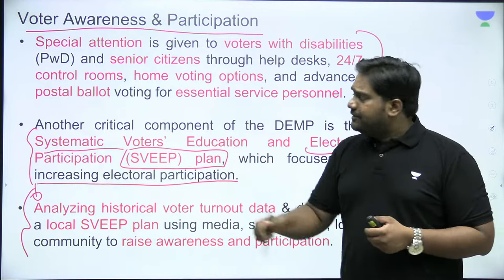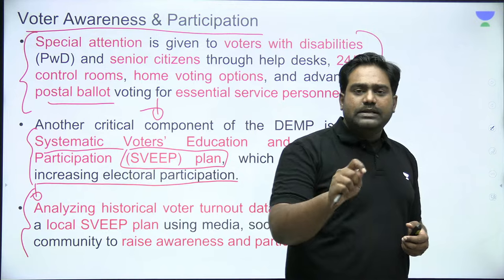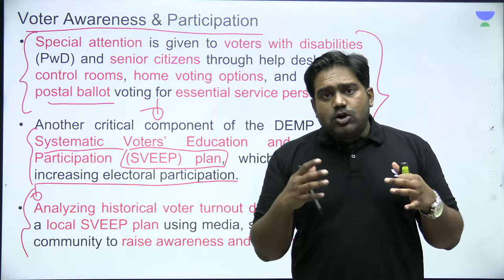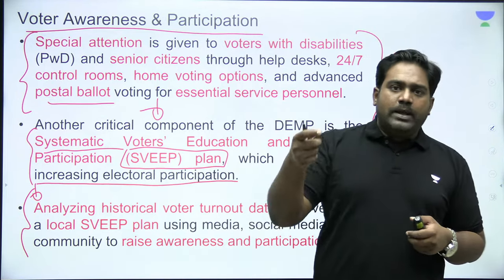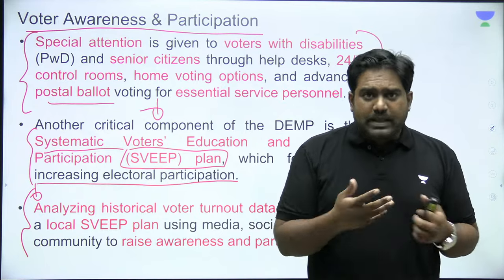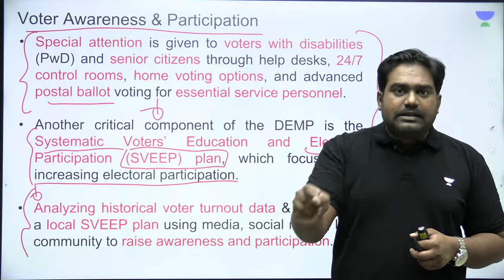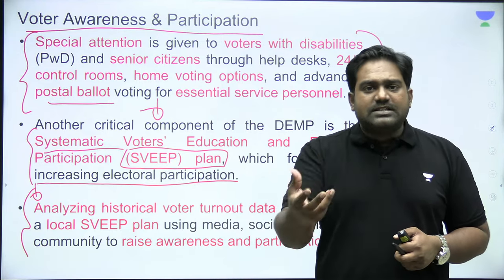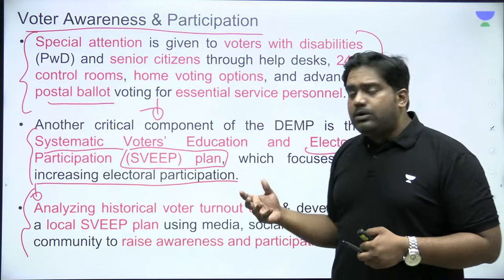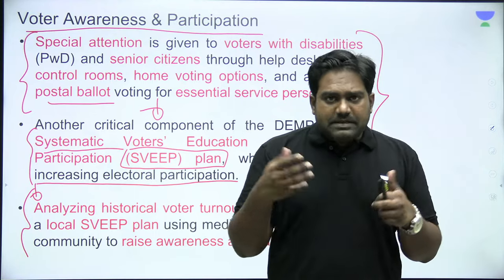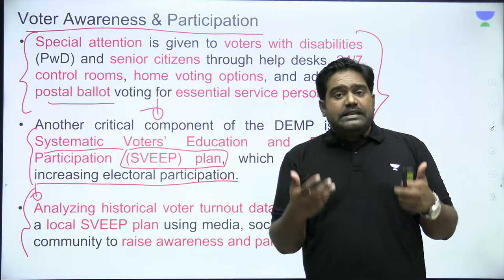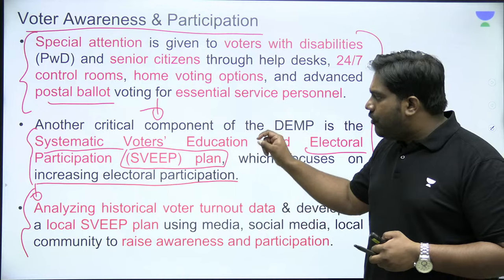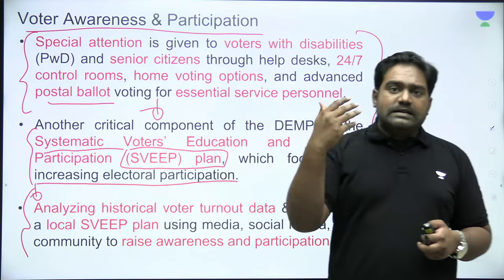These plans become easier if data regarding voter turnout is available. If certain constituencies have voter turnout consistently above 80%, those are not a concern. But if some polling booths have consistently low turnout — 30, 40, or 50% — those can be targeted under the SVEEP plan. More initiatives can be run in those areas to ensure greater voter turnout. Research can be conducted to figure out what is inhibiting voters from coming out. Historical voter turnout data is a critical input for the SVEEP plan which focuses on voter awareness and increasing voter turnout.